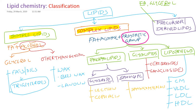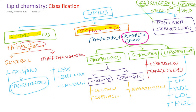Fatty acids are synthesized in our body by de novo synthesis. Another example is cholesterol, a precursor lipid, because from cholesterol our body can synthesize vitamin D. All fat-soluble vitamins are classified under derived lipids. From cholesterol, all steroid hormones are also classified under derived lipids, and cholesterol itself is synthesized in our body by de novo synthesis.